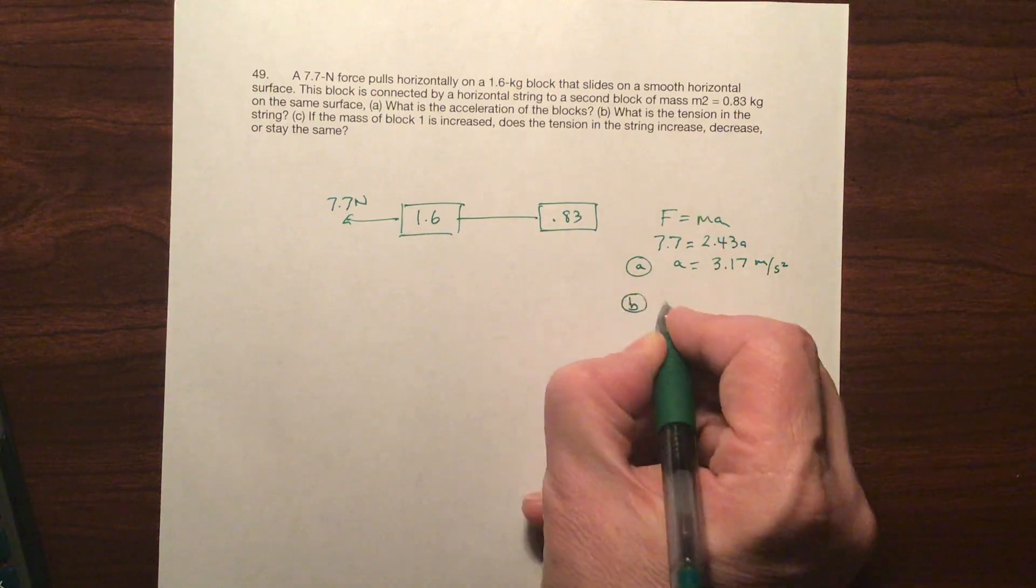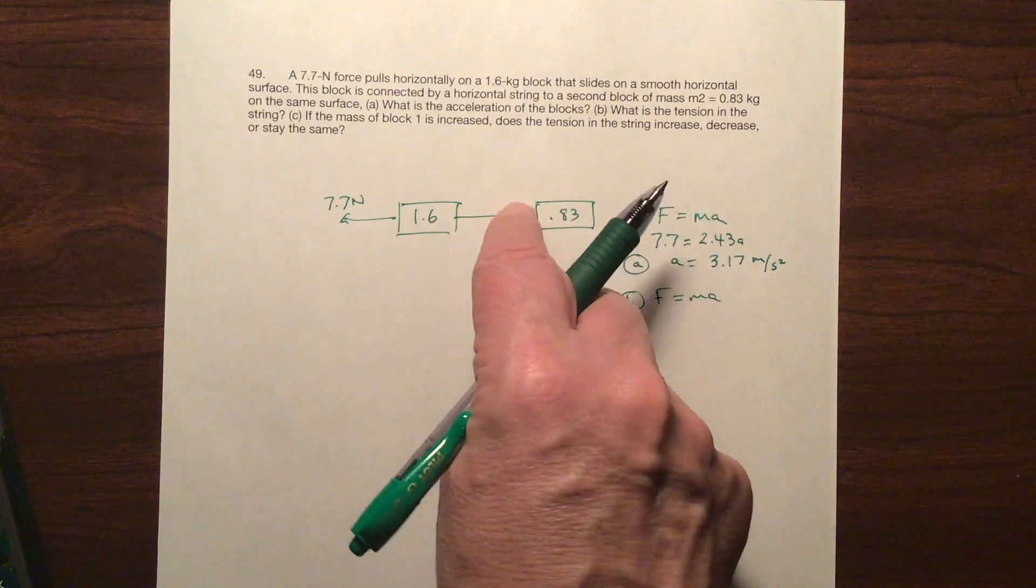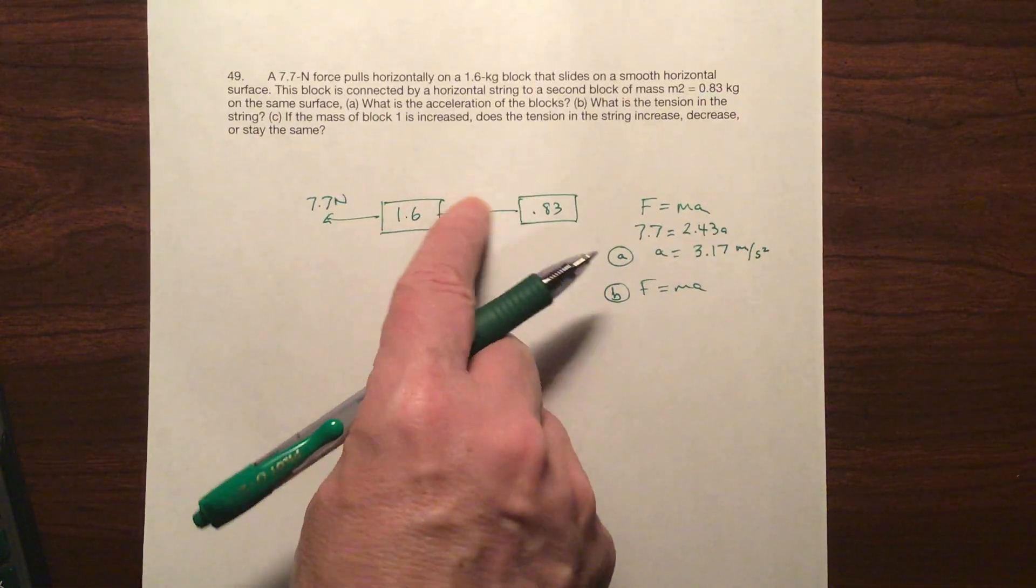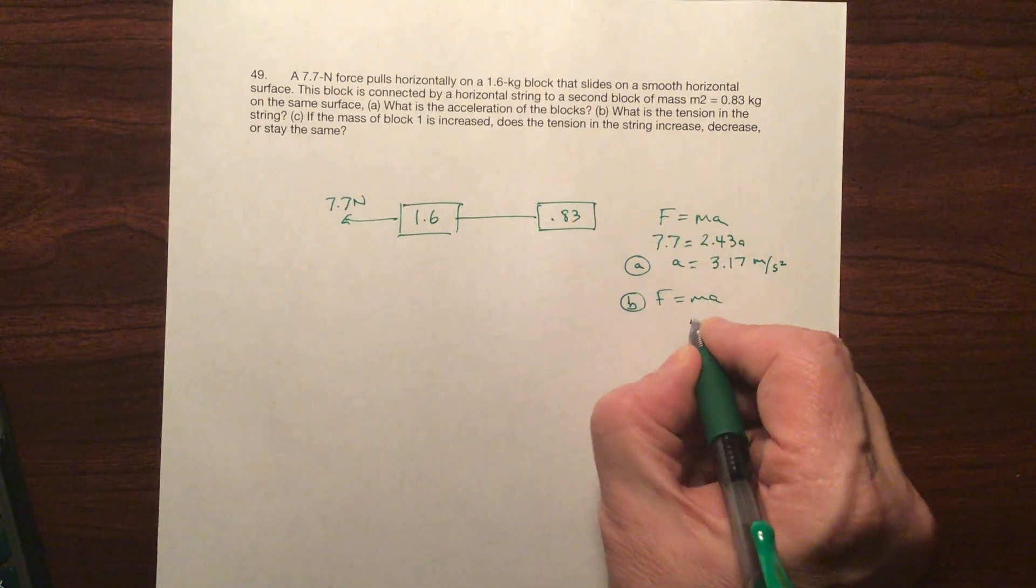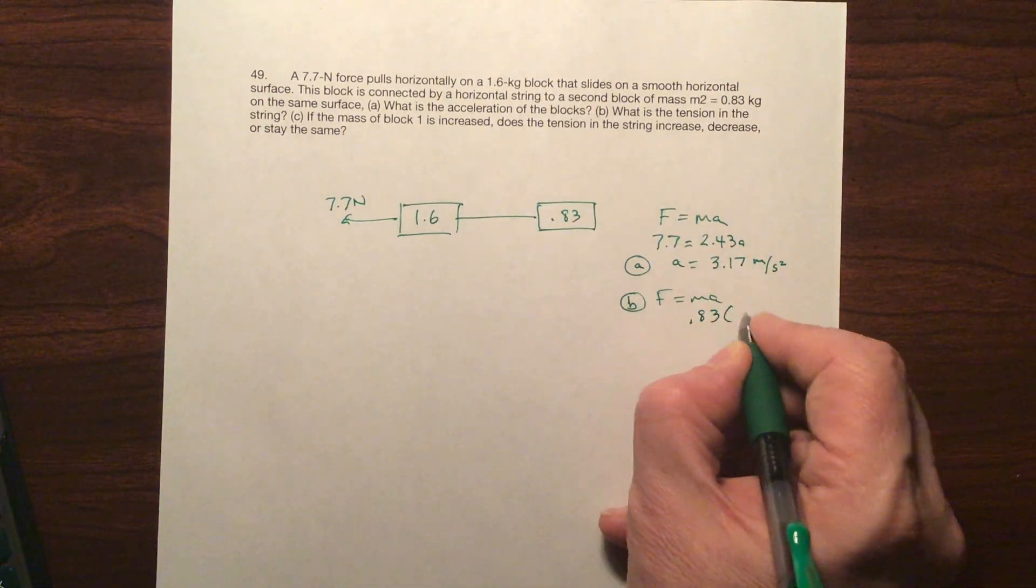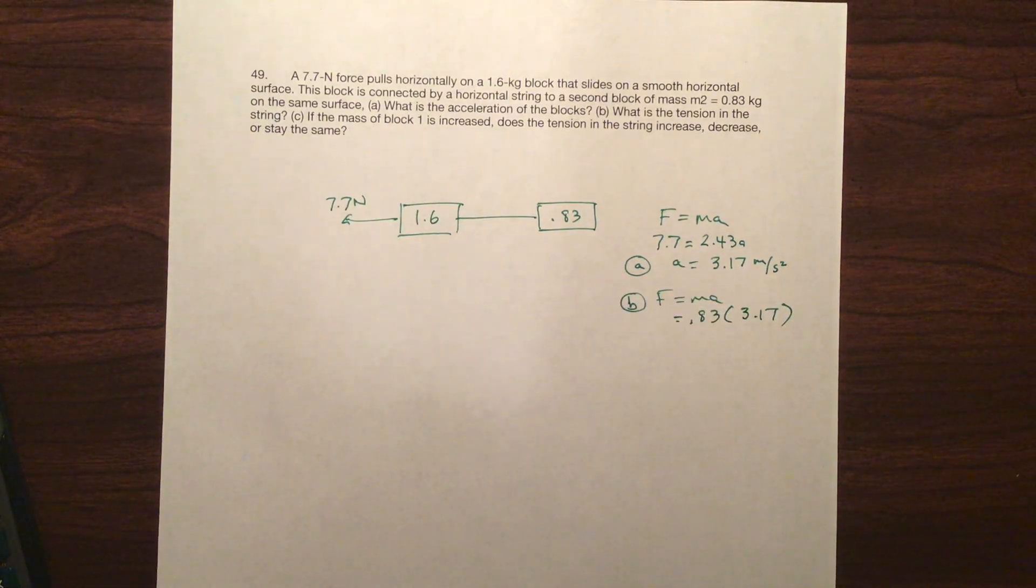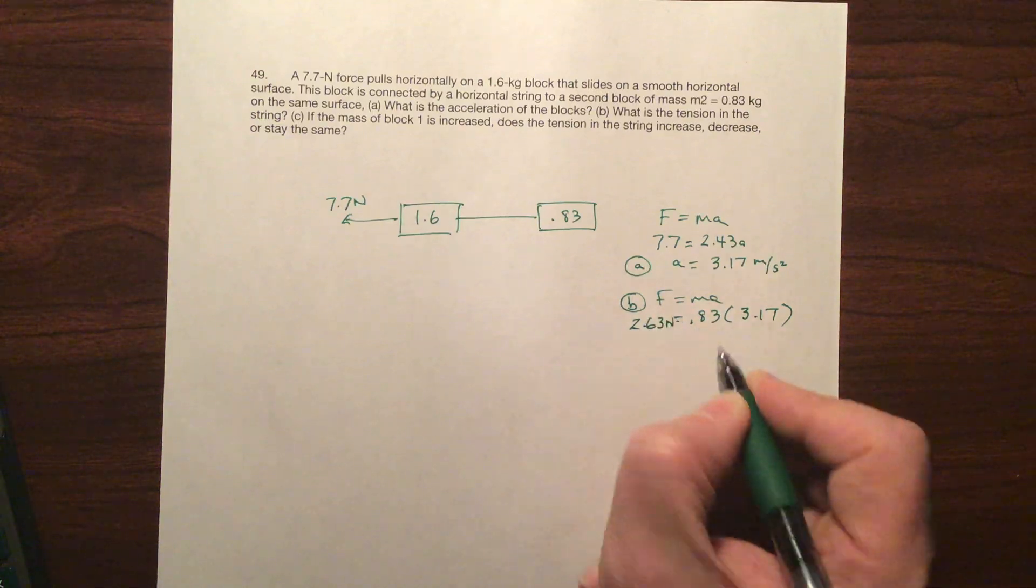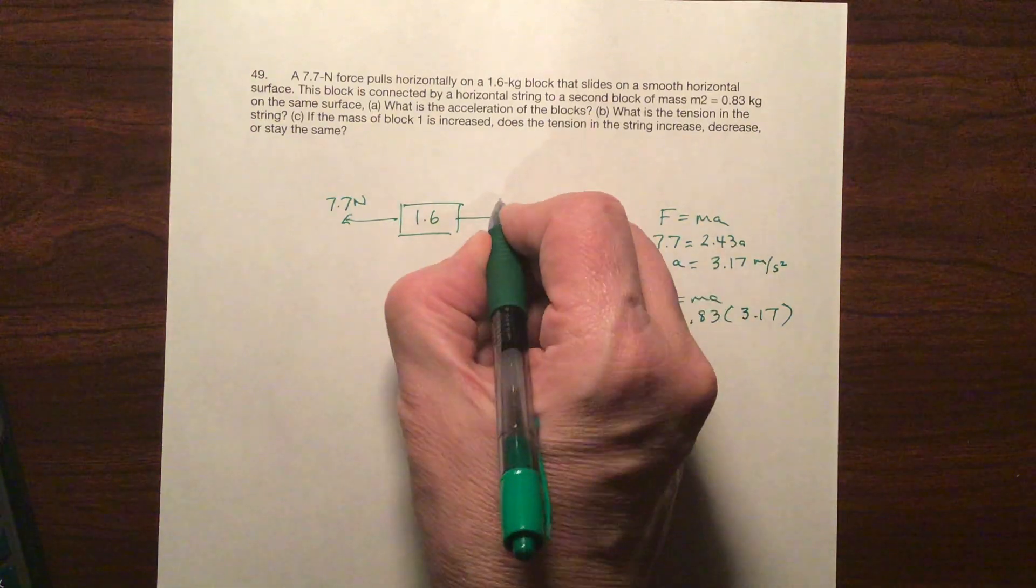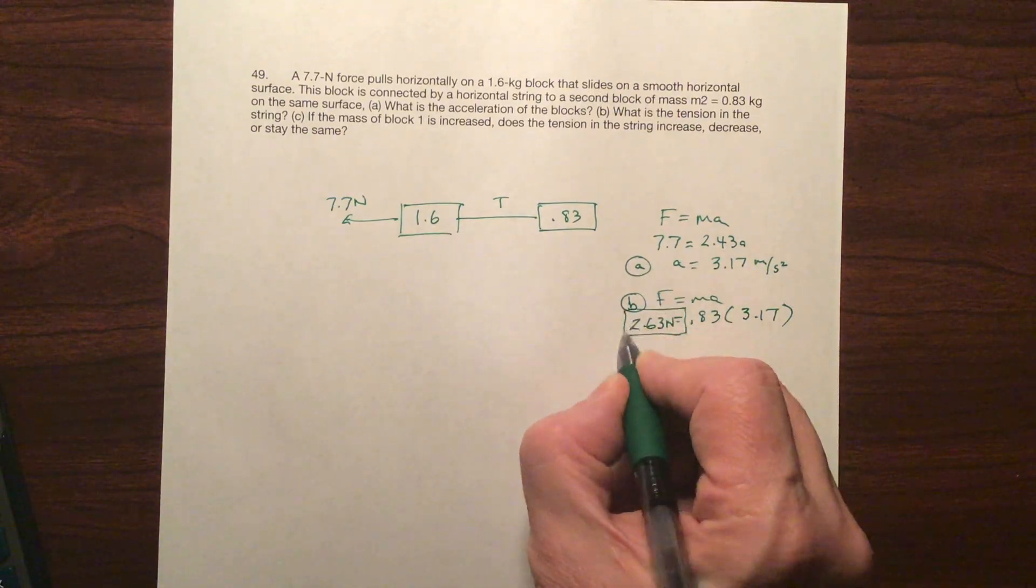So again, here's the B part. We've got F equals ma. But this time we're only concerned with this because I'm pulling this with the tension. The tension in that string is pulling one block. Okay, so I've got 0.83 times 3.17 is my acceleration. So 2.63. 2.63 Newtons. That's the tension in this.